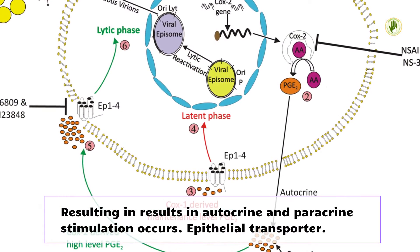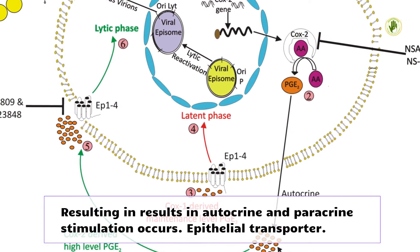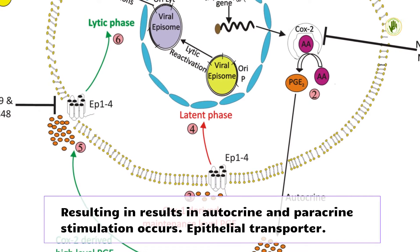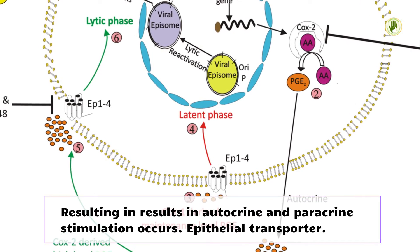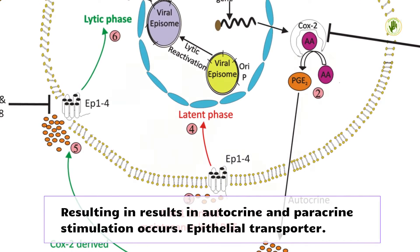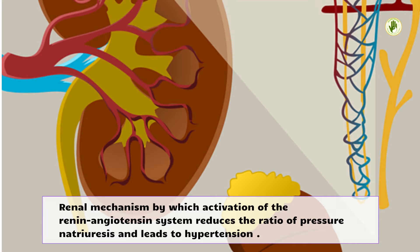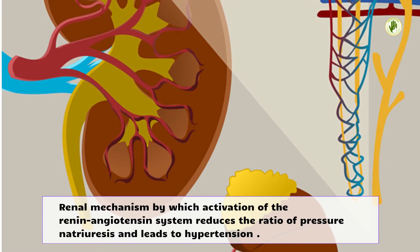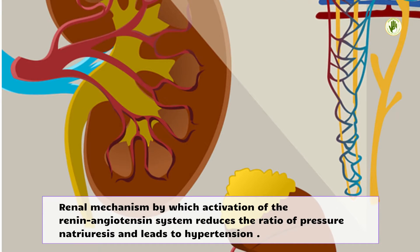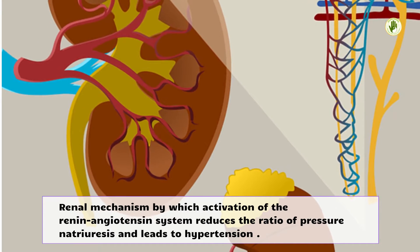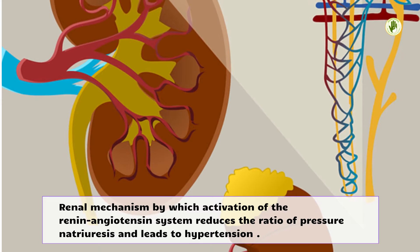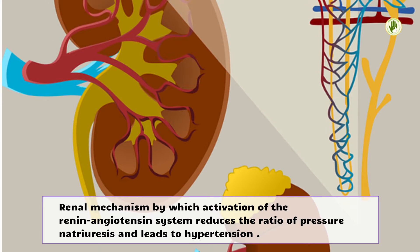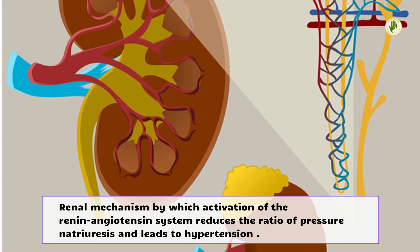This results in autocrine and paracrine stimulation of epithelial transporters. The renal mechanism by which activation of the renin-angiotensin system reduces the pressure-natriuresis ratio leads to hypertension.